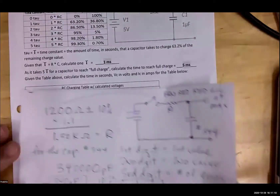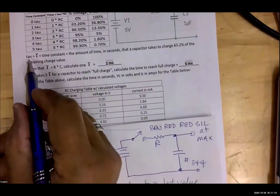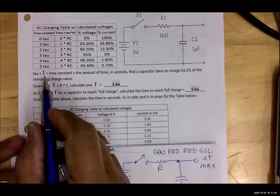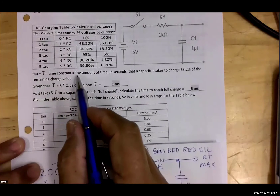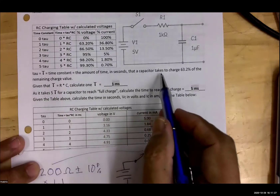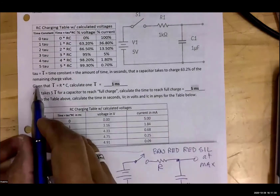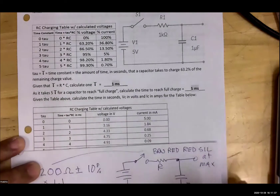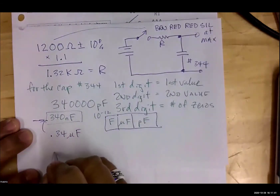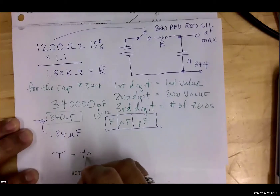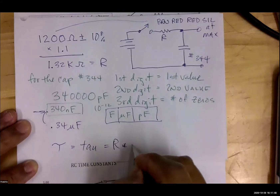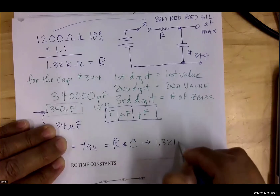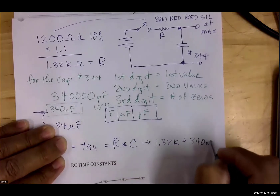The very first thing this exercise asks you to do involves tau — T-A-U — called the time constant. It looks like a cursive T. The time constant is the amount of time, in seconds, that a capacitor takes to charge 63.2% of the remaining charge value. Given that tau equals R times C, calculate 1 tau. So tau T equals R times C, and that would be 1.32 kΩ multiplied by 340 nanofarads.